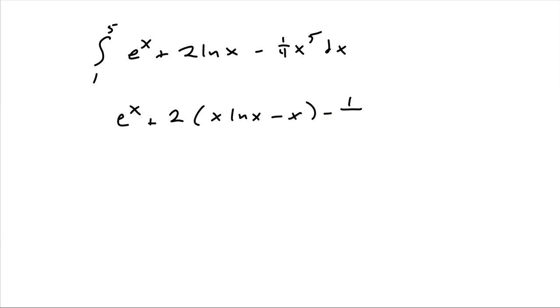And we'll evaluate that from 1 to 5. So that would be e^5 plus 10 ln(5) minus 5 minus 1/24 times 5^6 minus e^1. So that should have been a plus back here.